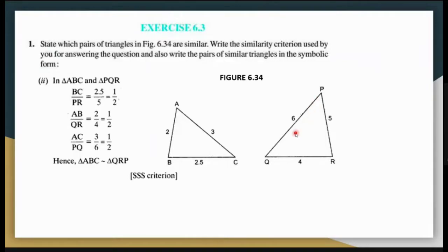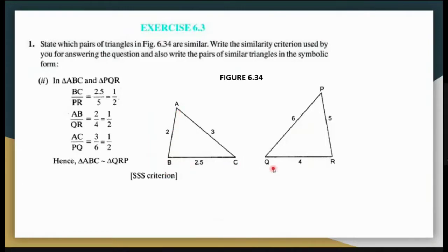Now let us understand how we will name the triangle. I know that triangle ABC is similar to triangle PQR. Going from side 2 to side 2.5 in triangle ABC — double of 2 is 4, double of 2.5 is 5 — so I go from side 4 centimeters to side 5 centimeters. Therefore, triangle ABC is similar to triangle QRP, and since the three sides are proportional, it is by the SSS criterion.